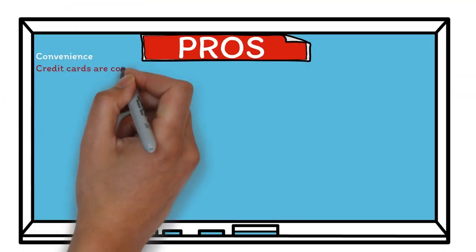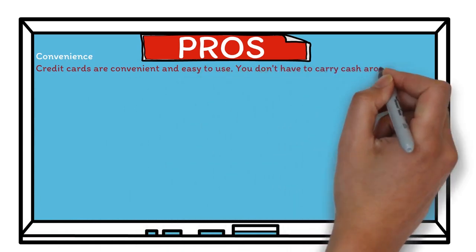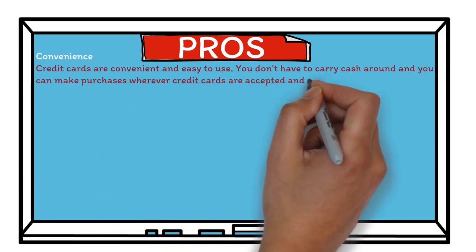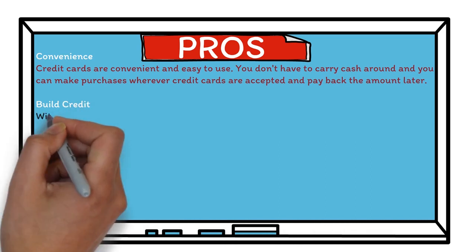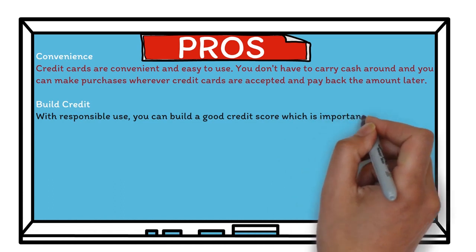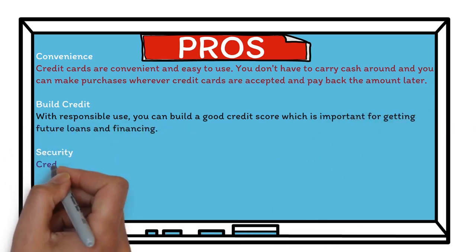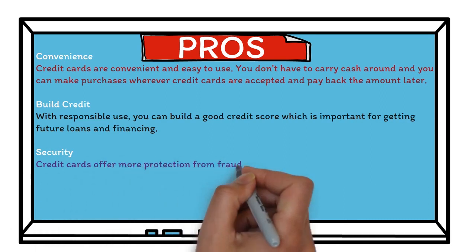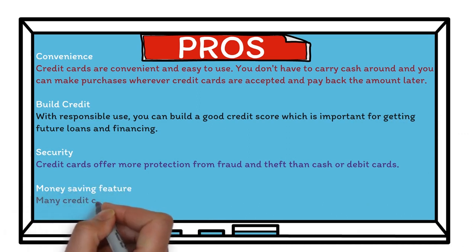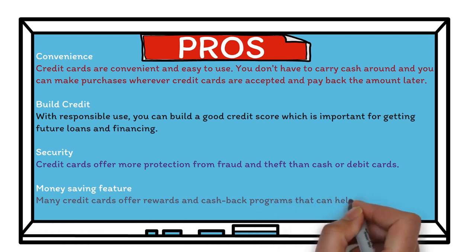Pros. Convenience. Credit cards are convenient and easy to use. You don't have to carry cash around and you can make purchases wherever credit cards are accepted and pay back the amount later. Build credit. With responsible use, you can build a good credit score which is important for getting future loans and financing. Security. Credit cards offer more protection from fraud and theft than cash or debit cards. Money saving features. Many credit cards offer rewards and cash back programs that can help you save money.